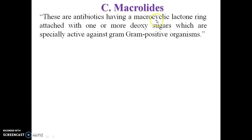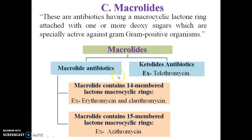The next antibiotic class inhibiting protein synthesis is the macrolides. Macrolides are antibiotics having a macrocyclic lactone ring attached to one or more deoxy sugars, and are specially active against gram-positive microorganisms. Macrolide antibiotics are classified into macrolide antibiotics and ketolide antibiotics. Macrolide antibiotics contain a 14- or 16-membered lactone ring; examples include erythromycin and clarithromycin. Ketolide antibiotics include telithromycin.